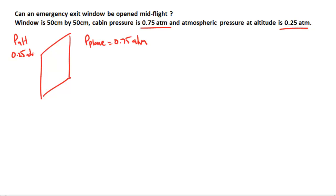Pressure outside the plane is less than the pressure inside the plane, and so what we want to consider here is that in order to open the window we need to pull on it. Why do we need to pull on it? Why not push on it?